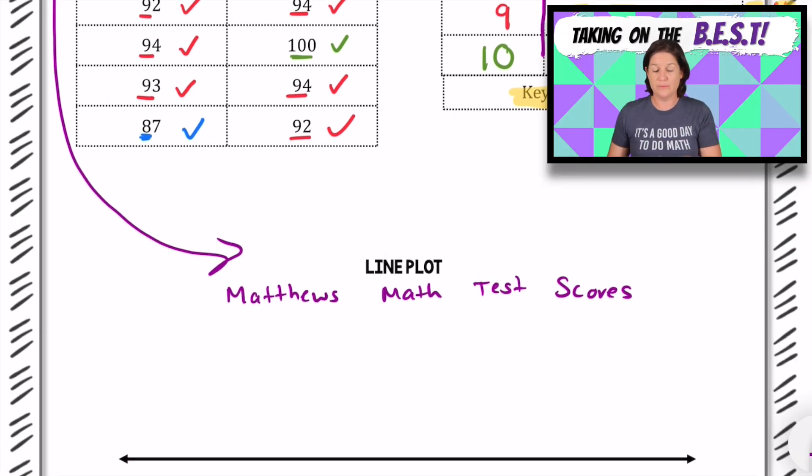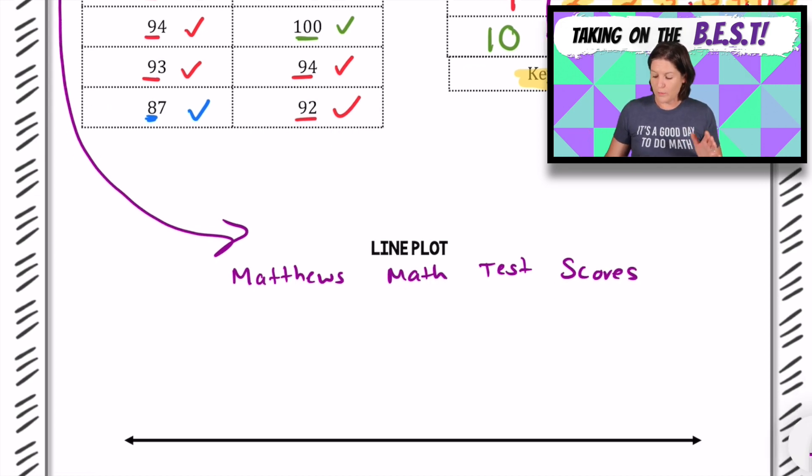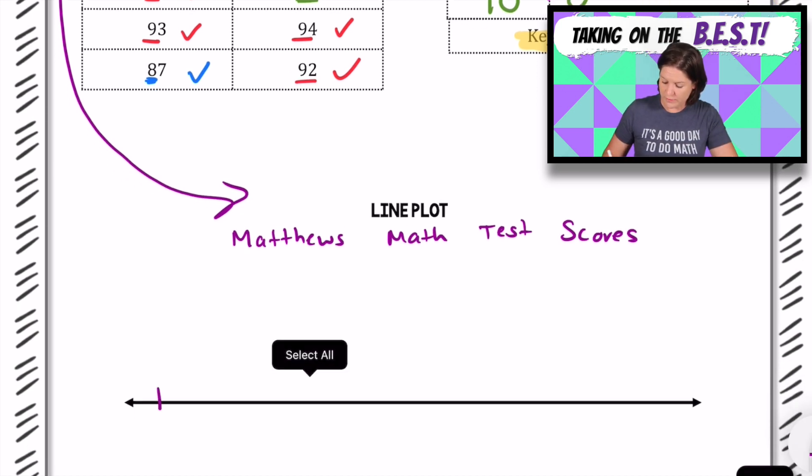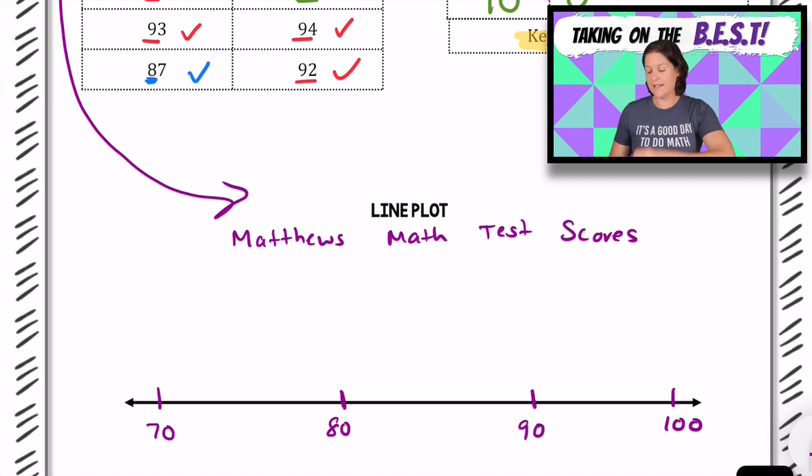Now, the cool thing about a stem and leaf plot, once we've already completed it, it makes it easy for us to generate a line plot. A line plot has Xs that we put. We're going to use Xs in these videos. What we're going to do is graph the same information using a line plot. We range from 70 to 100, right? And then let's make this 80 and 90.